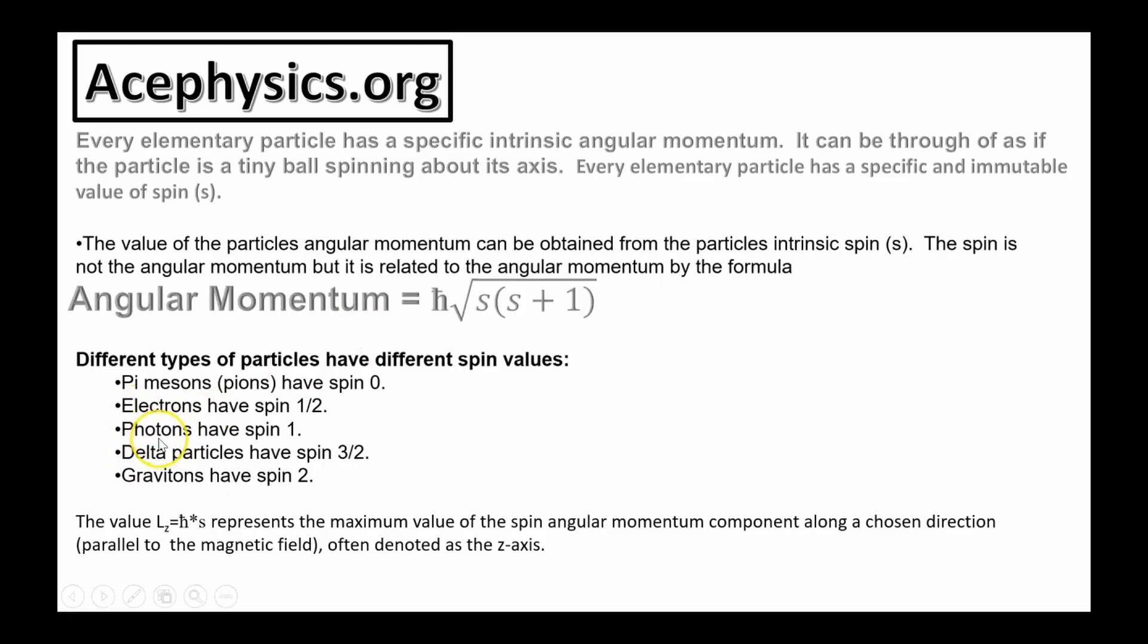A photon, which is a particle of light, has a spin 1, and therefore it has a total angular momentum of square root of 2 times h-bar. The value Lz equals h-bar times s represents the maximum value of the spin angular momentum component along a chosen direction parallel to the magnetic field. This is often denoted as the z-axis.